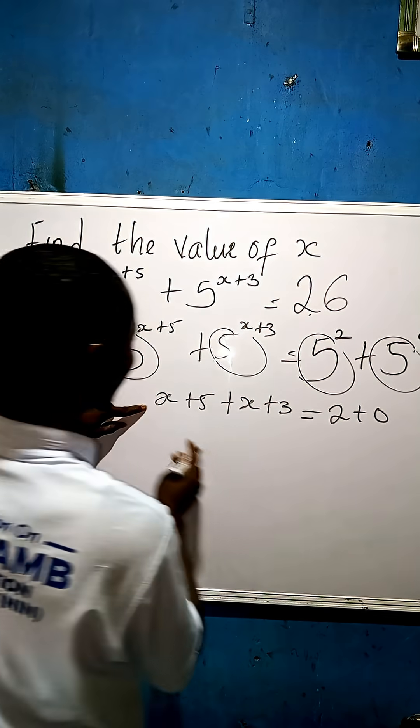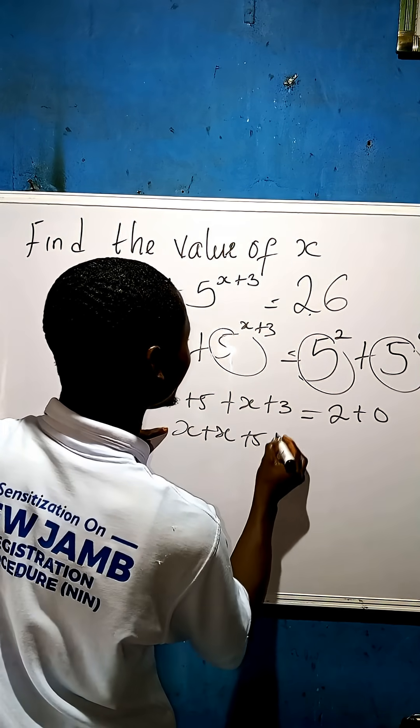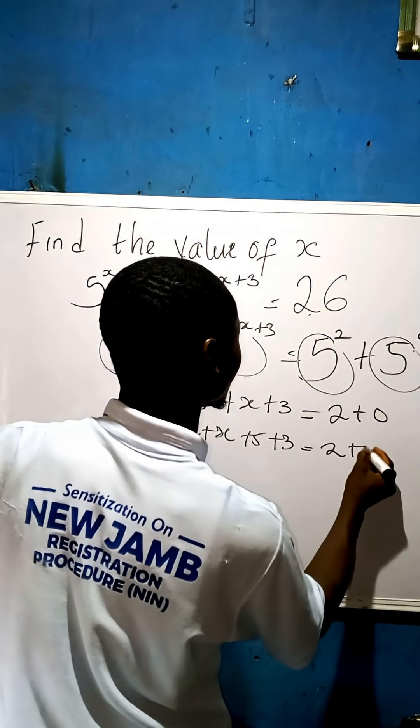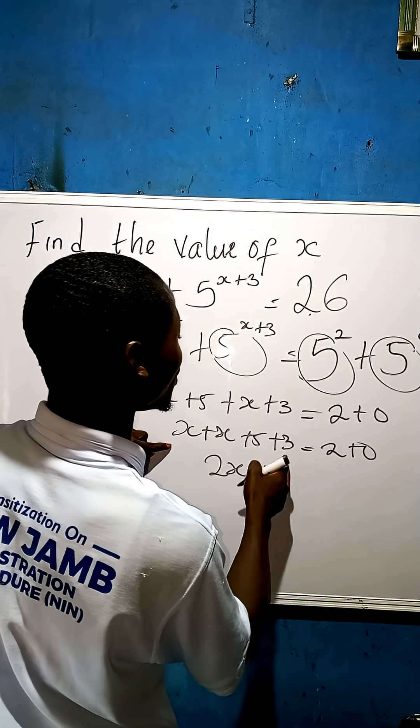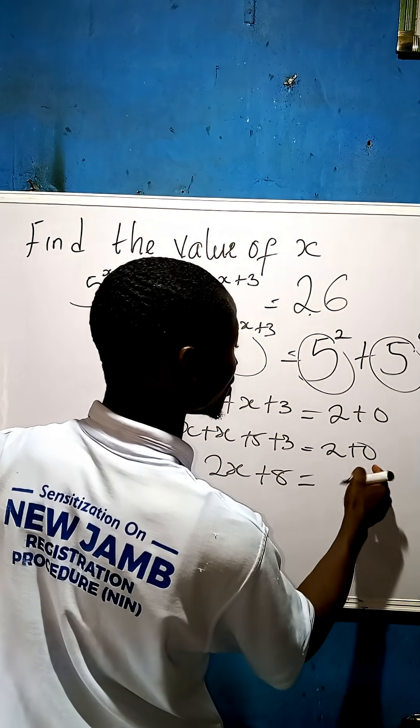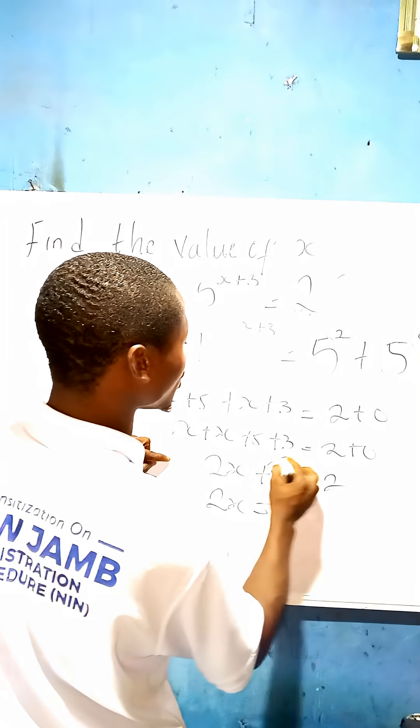Let us bring the x together: x plus x plus 5 plus 3 equal to 2 plus 0. X plus x here is 2x, plus 5 plus 3 is plus 8, equal to 2 plus 0 is 2. Now 2x equal to 2.